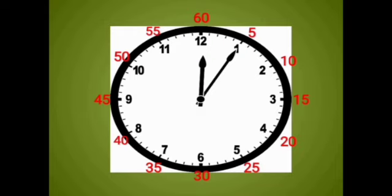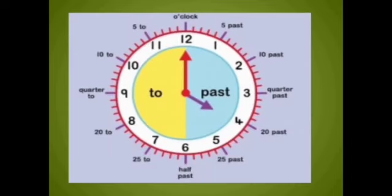Clear? The minutes hand, if it is on 1, then we will read 5. Same as if it is on 6, then we will read 30. If on 9, then we will read 45.